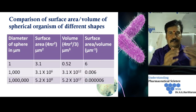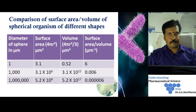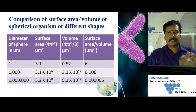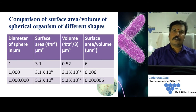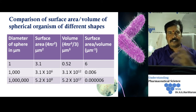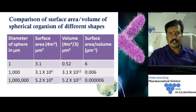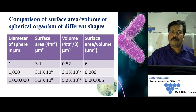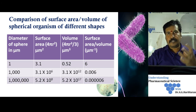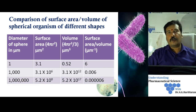Taking three examples of spheres with different diameters: one micrometer, similar to a bacterium; 1,000 micrometers; and 1 million micrometers, more like a human-scale organism. Using the formula for surface area (4πr²) and volume (4πr³/3), we can calculate the surface area-to-volume ratio for each. A sphere of 1 micrometer has about 6 times higher surface area-to-volume ratio compared to a large organism of 1 million micrometers — almost 1 million times greater.